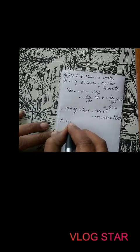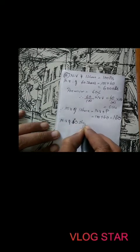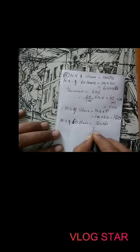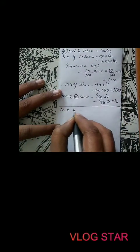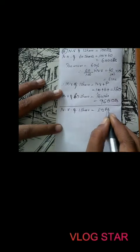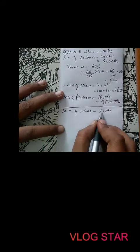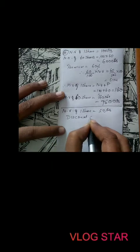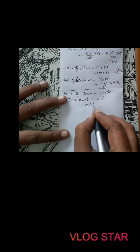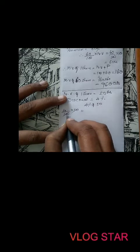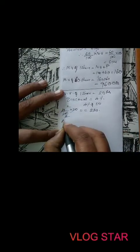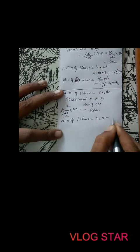Market value of 60 shares is 160 into 60 equals 9,600 rupees. In the second case, nominal value of one share is 50 rupees with a 4% discount. Discount is 4 by 100 into 50 equals 2 rupees. So market value of one share is 50 minus 2 equals 48 rupees.